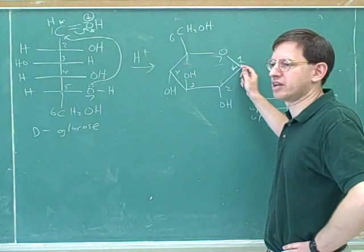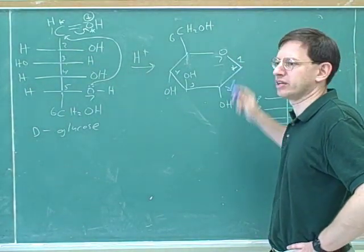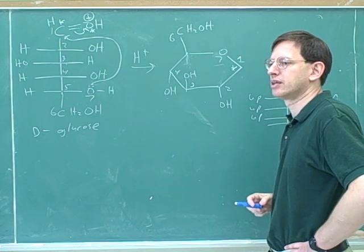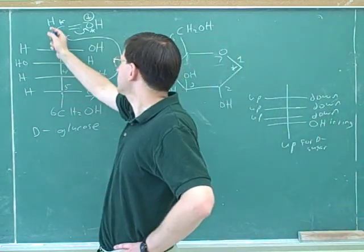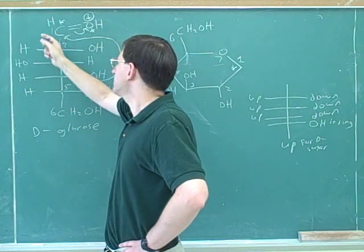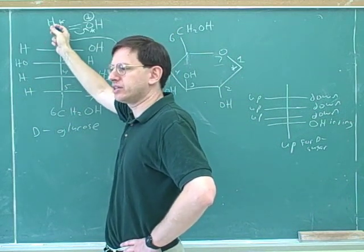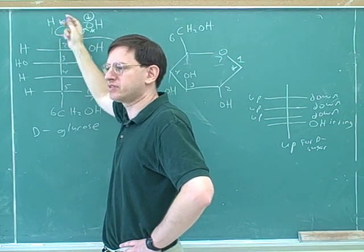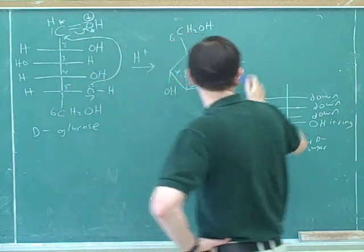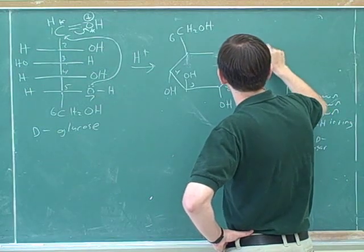Now, the one thing we haven't done yet is put in the substituents on the number one. Who's attached to the number one? An alcohol group, it can go up or down. That's right. Why can it go up or down? Because this stereocenter wasn't set yet. And what's the geometry originally of this aldehyde? Trigonal planar. And we know that when we attack something trigonal planar, we get both stereochemical outcomes.